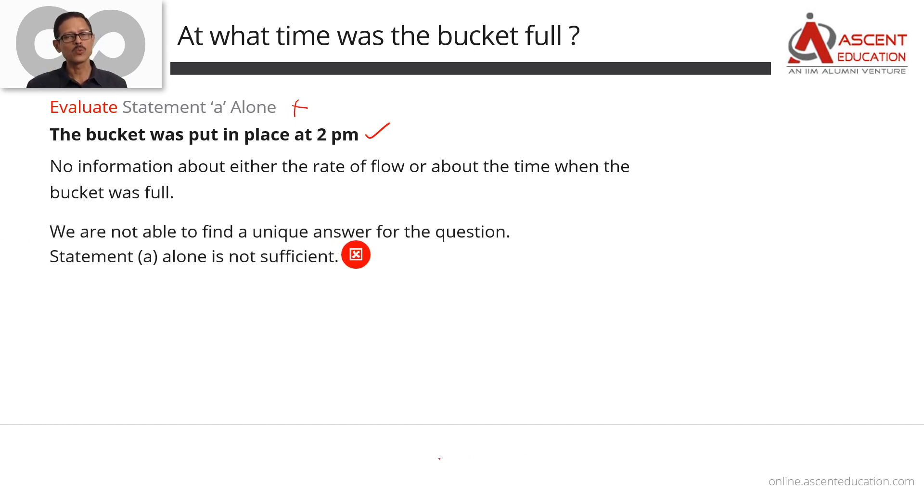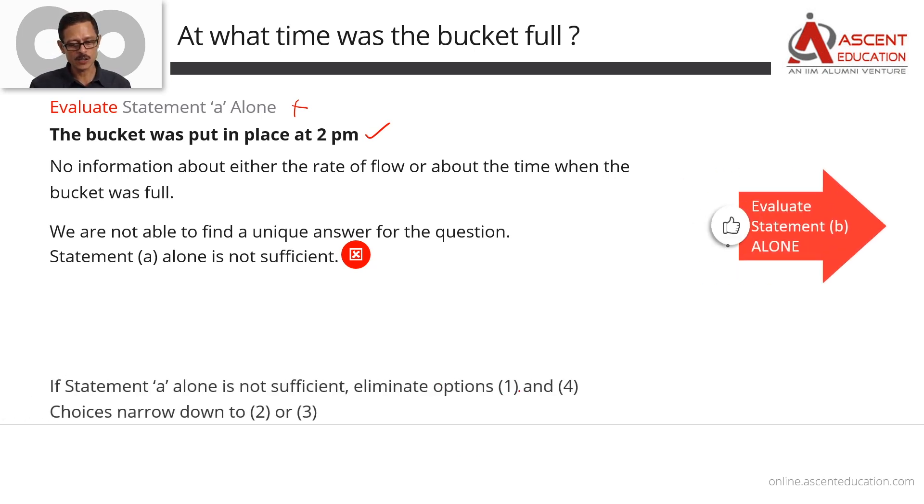Statement A alone is not sufficient. Rule out answer options 1 and 4. Independently the statements are sufficient - that answer option we eliminate. So answers are down to either 2 or 3. 2 means statement B alone is sufficient. So if that is not sufficient, let's combine the two statements and check whether it is sufficient. First let's evaluate statement B alone.